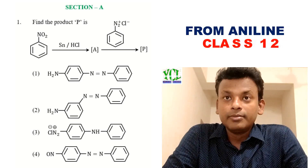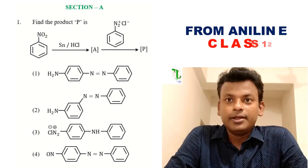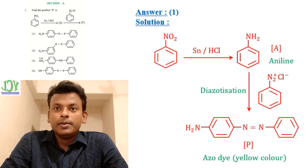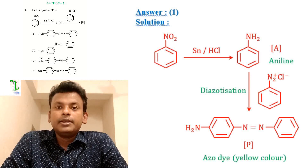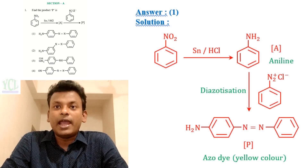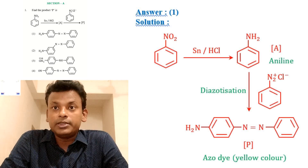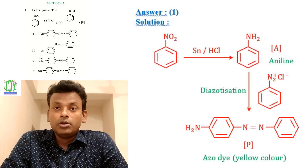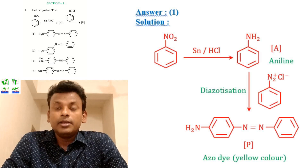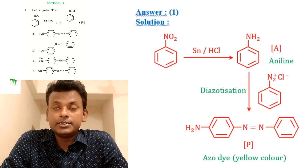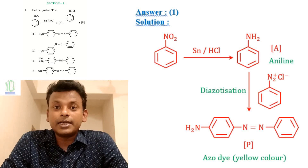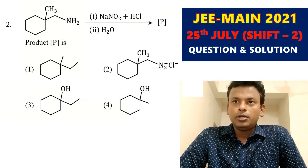Options are given and the answer is option 1. Nitrobenzene is first reduced by Sn/HCl to form aniline. Aniline reacts with a diazonium salt via diazotization to form an azo compound of yellow color. So the answer is 1, and next is question number 2.